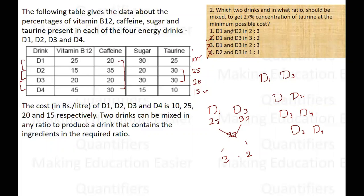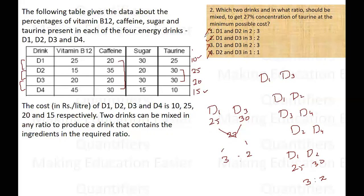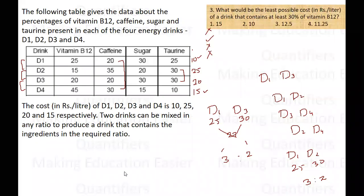Checking D1 and D2: D1 has 25% Taurine and D2 has 30% Taurine, so they can be combined, but the ratio would again be 3:2, not 2:3 as stated in option 1. Therefore option 1 is incorrect and the correct answer is option 2: D1 and D3 in the ratio 3:2.